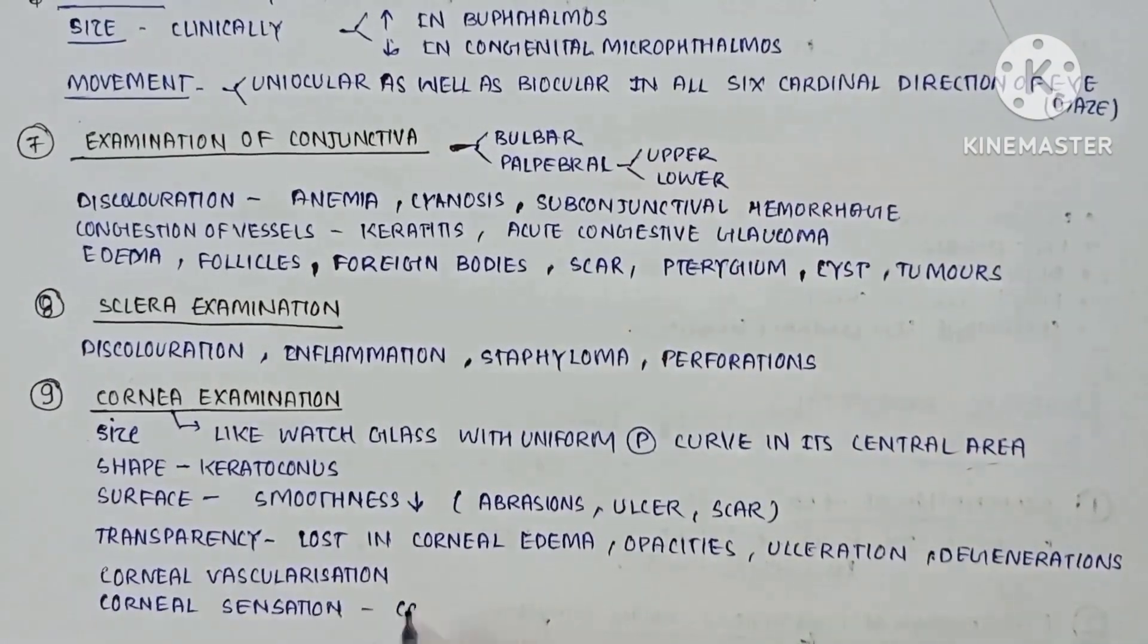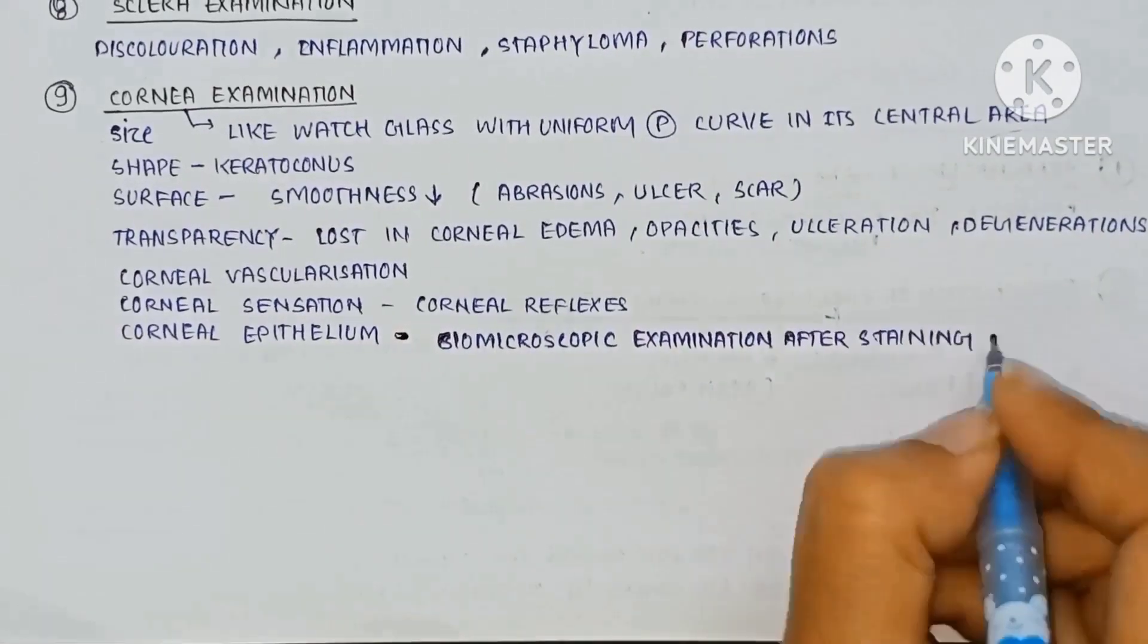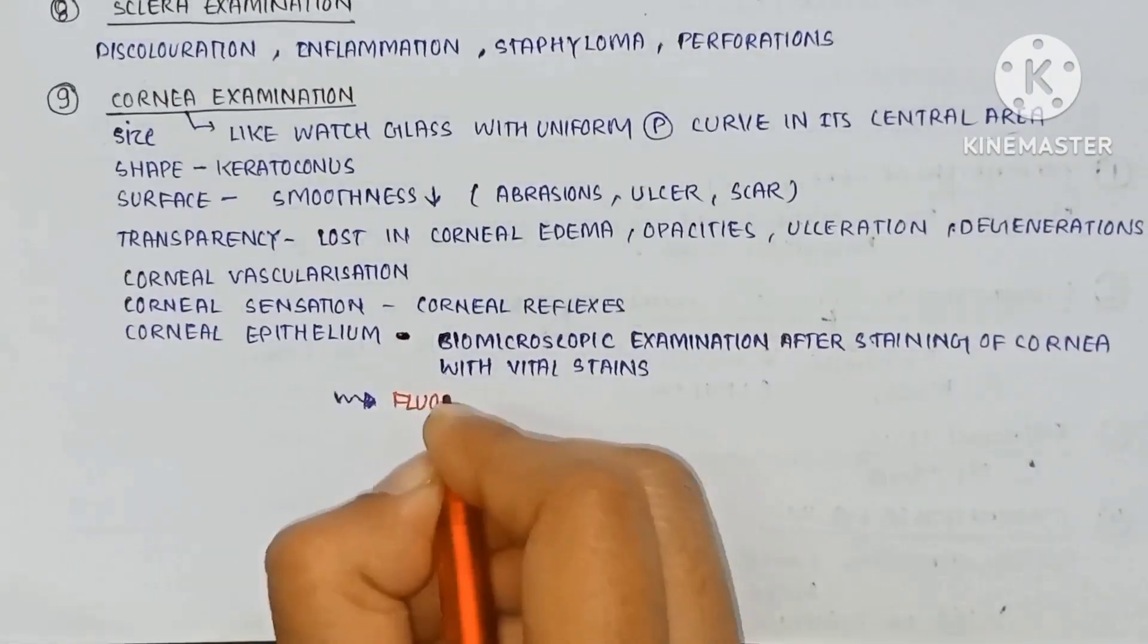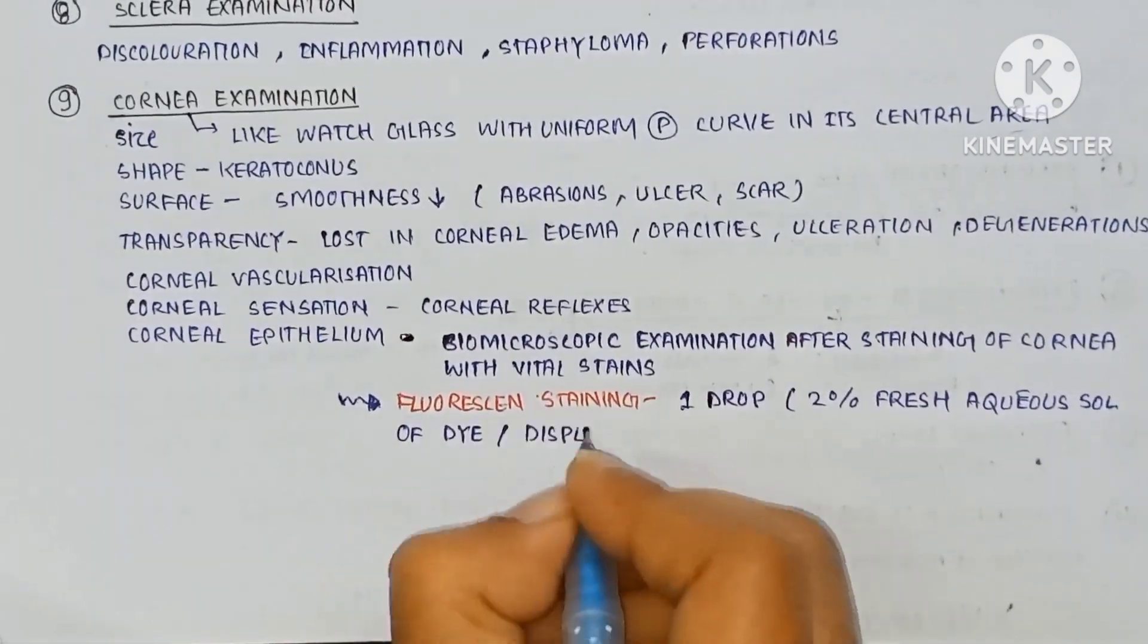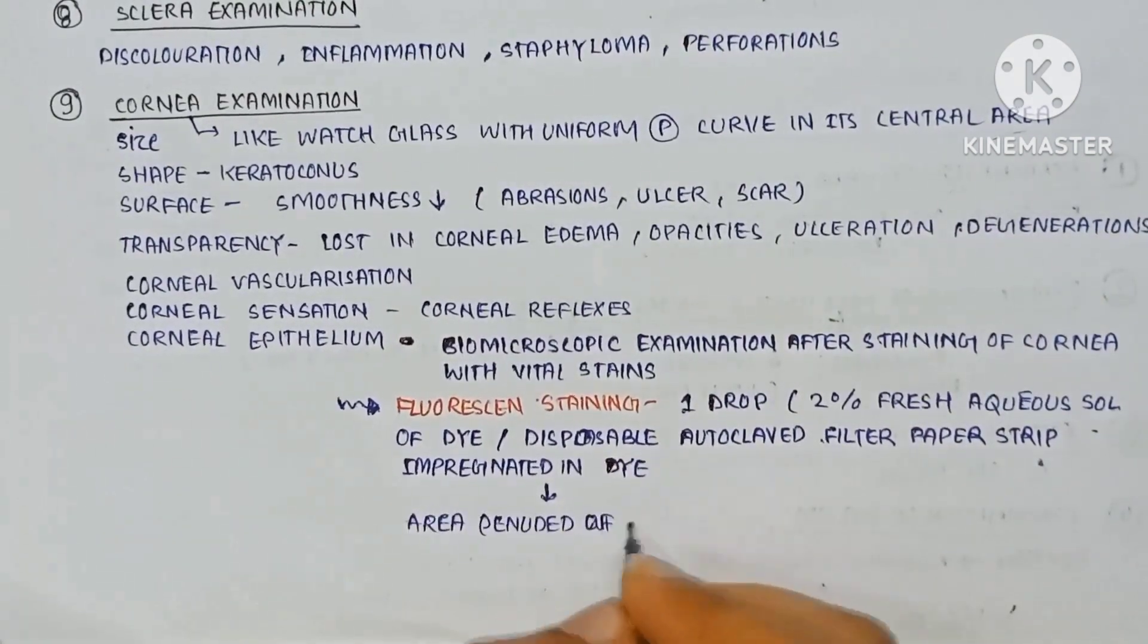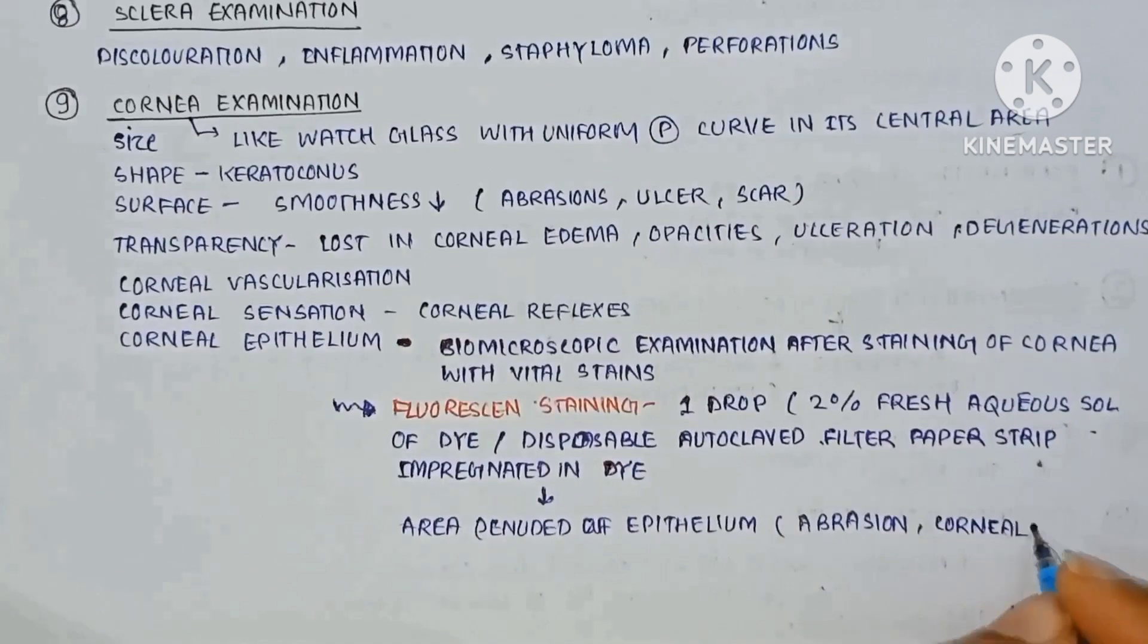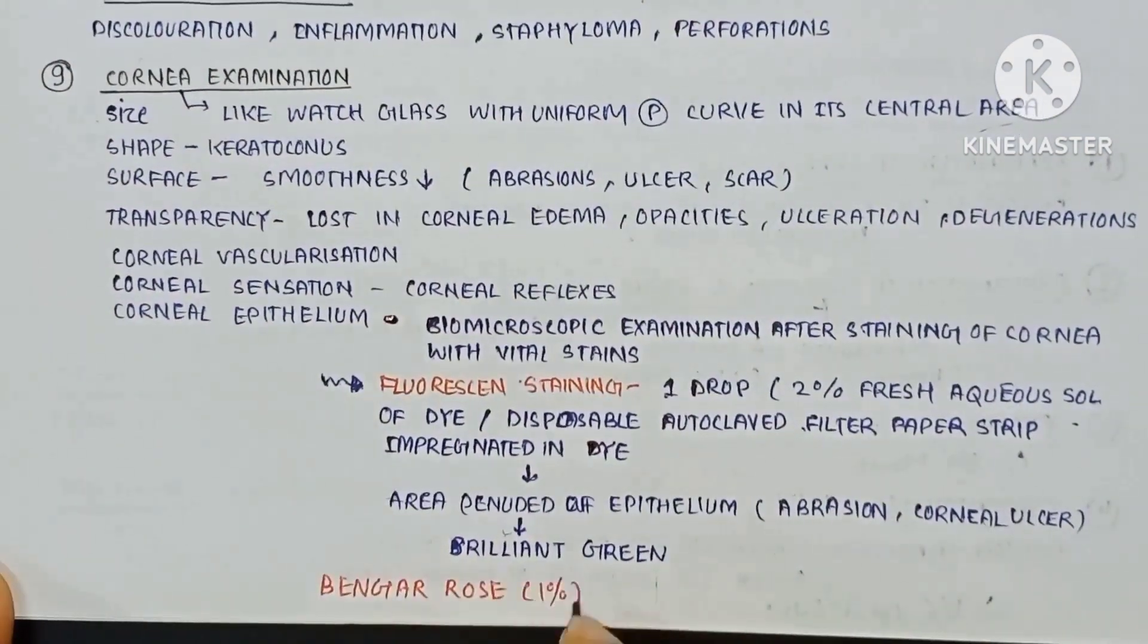Corneal vascularization, sensation reflexes, the corneal epithelium. By microscopy examination after staining of the cornea with vital stain, the fluorescein staining one drop, 2% fresh aqueous solution of the dye or disposable water-clear filter papers impregnated in the dye. The area denuded of epithelium due to abrasion and corneal ulcer become brilliant green. The other dye used: Bengal rose, 1% solution.